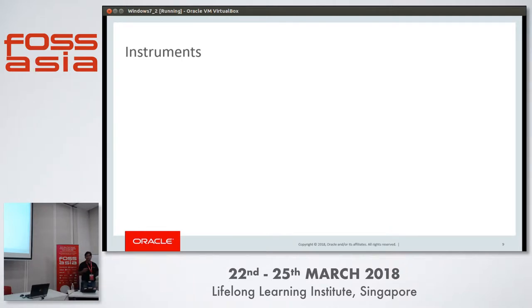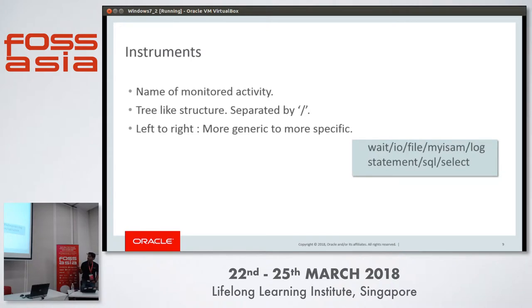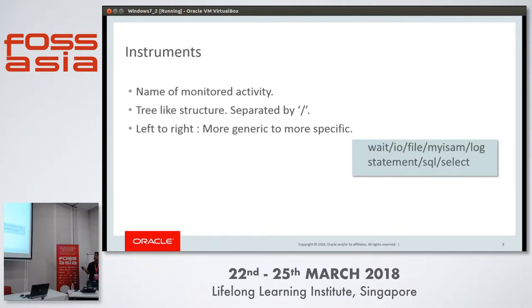Let's talk about instruments and instrumentation. In the MySQL server, there are many activities happening behind the scenes. To uniquely identify those activities, we have given them names — these names are the instruments. In an instrument name, moving left to right takes you from more generic to more specific, with parts separated by a forward slash. For example, wait/io/file/myisam/log says: this is a wait activity, specifically an IO wait, happening on a file — the MyISAM log file. So Performance Schema can monitor any IO happening on that file.